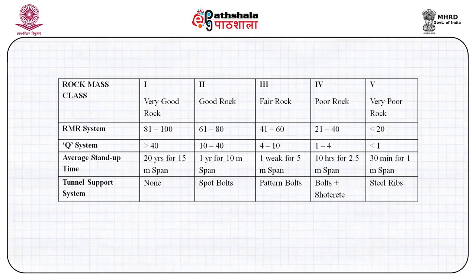Sometimes within 1 kilometer of tunneling, you may come across any of these rock mass classes — very good, good, fair, poor, or very poor — especially if you are crossing any shear zone or fault zone. Within a tunnel, we may encounter very different conditions at different sections. That is why it is said that as far as tunneling operation is concerned, you have to design as you go. So be ready for the worst, and hope for the best.